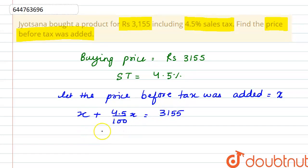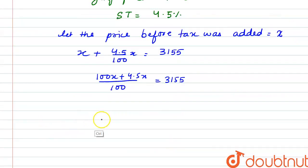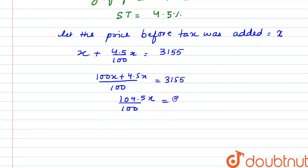Now if we take LCM, with denominator 100: 100x plus 4.5x equals 3155. If we solve it, we get 104.5x divided by 100 equals 3155.